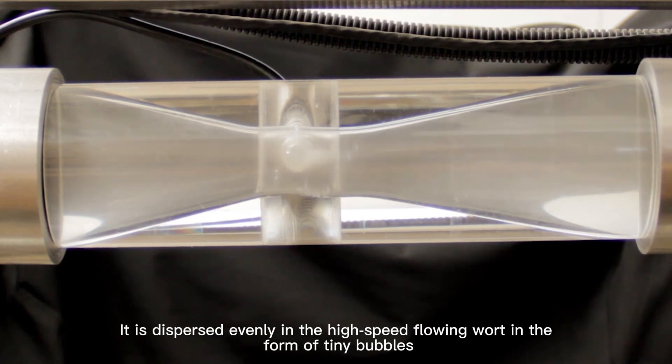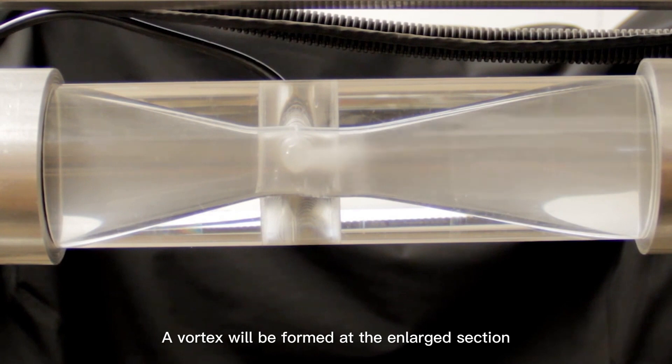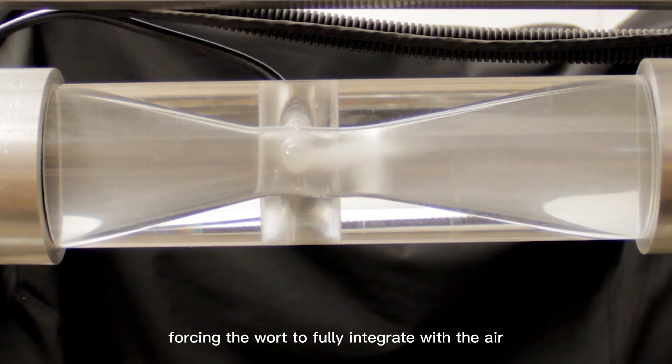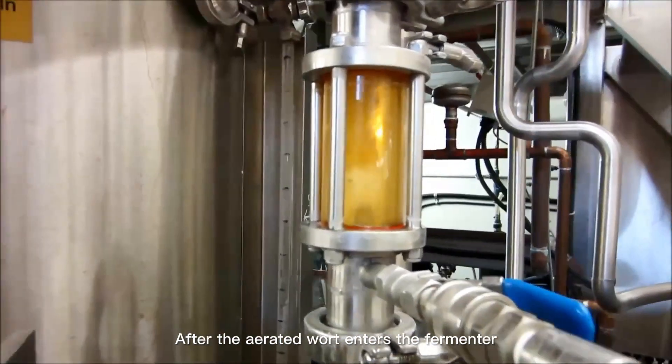The air disperses evenly in the high-speed flowing wort in the form of tiny bubbles. A vortex will be formed where the cross section increases, forcing the wort to fully fuse with the air.